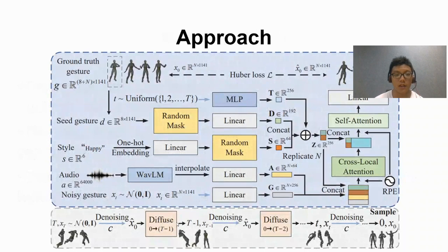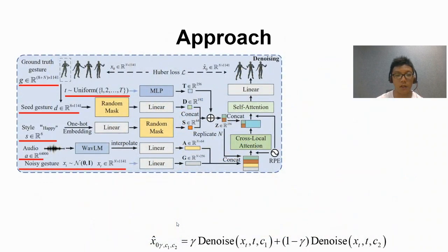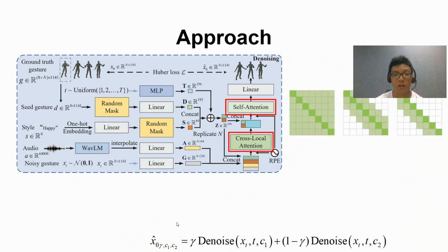The denoising sample module of our framework is shown in the figure. A noisy step T and a noisy gesture sequence XT at this noisy step, conditioning on C, including seed gesture D, style S, and audio A, are fed into the model. Cross-local attention and self-attention can better capture the correlations between speech and gestures based on VBERT features. Random masks in the seed gesture and style feature processing pipeline help classifier-free guidance training of the module and perform interpolation and extrapolation to achieve a high degree of control over the generated gestures.